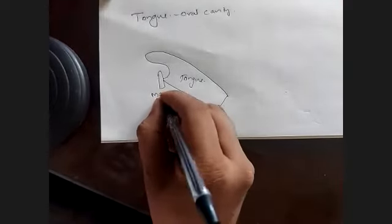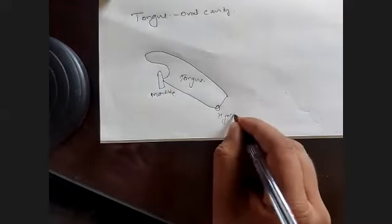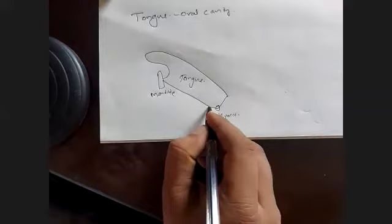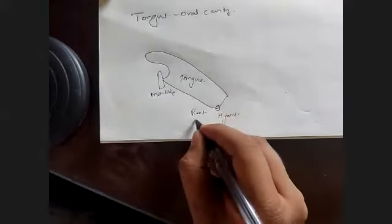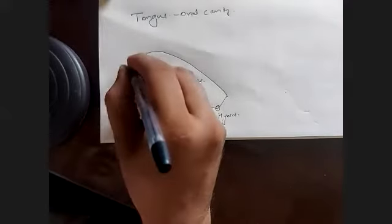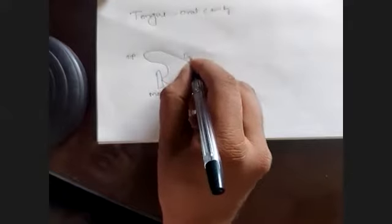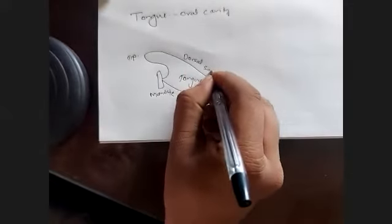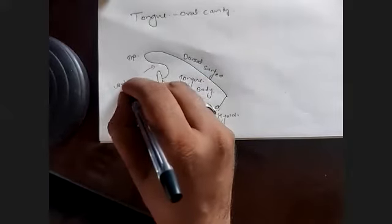This is the mandible, this is the hyoid. Running from mandible to hyoid, this part is called the root of the tongue. This part is called the tip of the tongue and this is the body of the tongue. This surface of the tongue is called the dorsal surface, and this part is called the ventral surface.